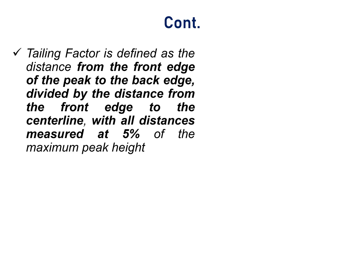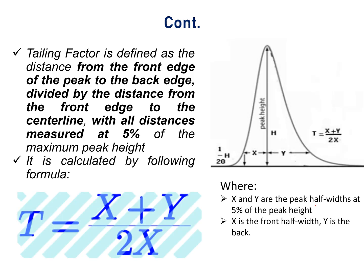Tailing factor is defined as the distance from the front edge of the peak to the back edge divided by the distance from the front edge to the center line, with all distances measured at 5% of the maximum peak height. It is calculated as: T = (x + y) / 2x, where x and y are the peak half-widths at 5% of the peak height. X is the front half-width and y is the back half-width.